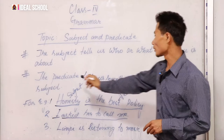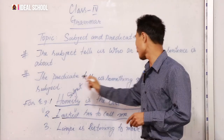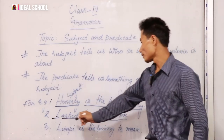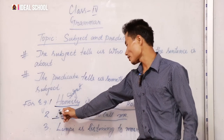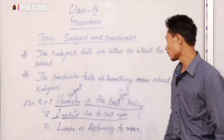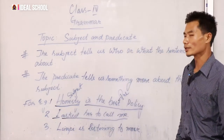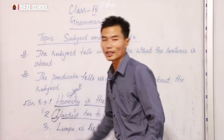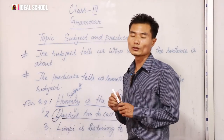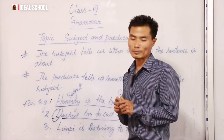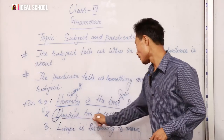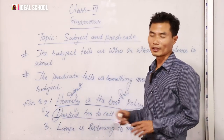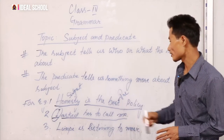When we talk about the subject, ask who or what — is it not? And when we talk about the predicate, it tells more about the subject. So in the second example, 'I asked her to call me,' 'I' will be the subject, and 'asked her to call me' will be the predicate.